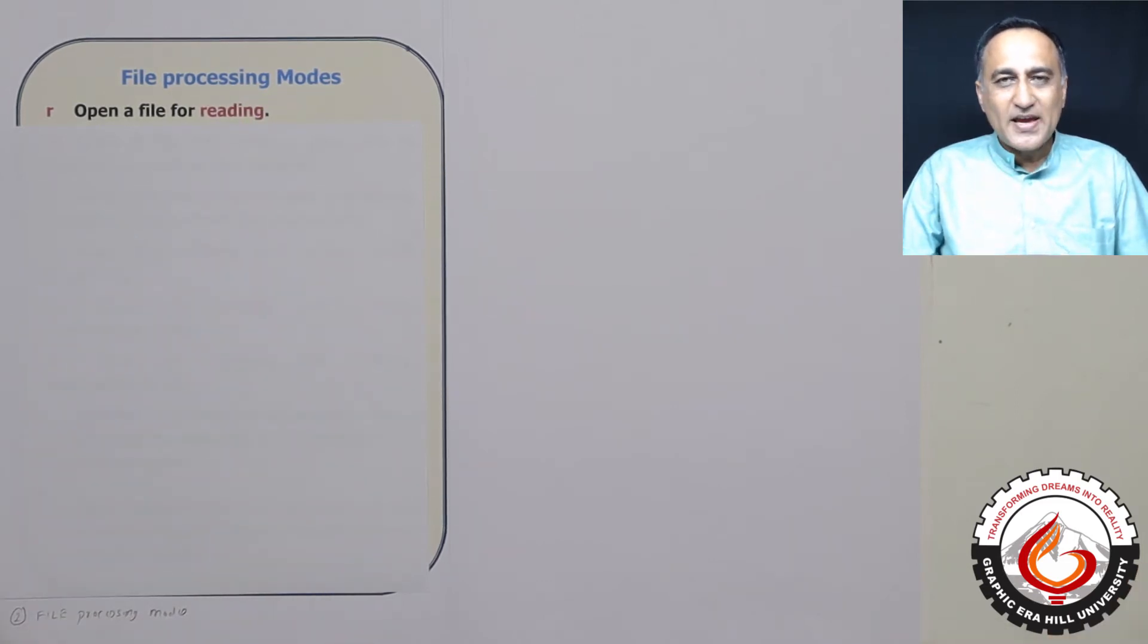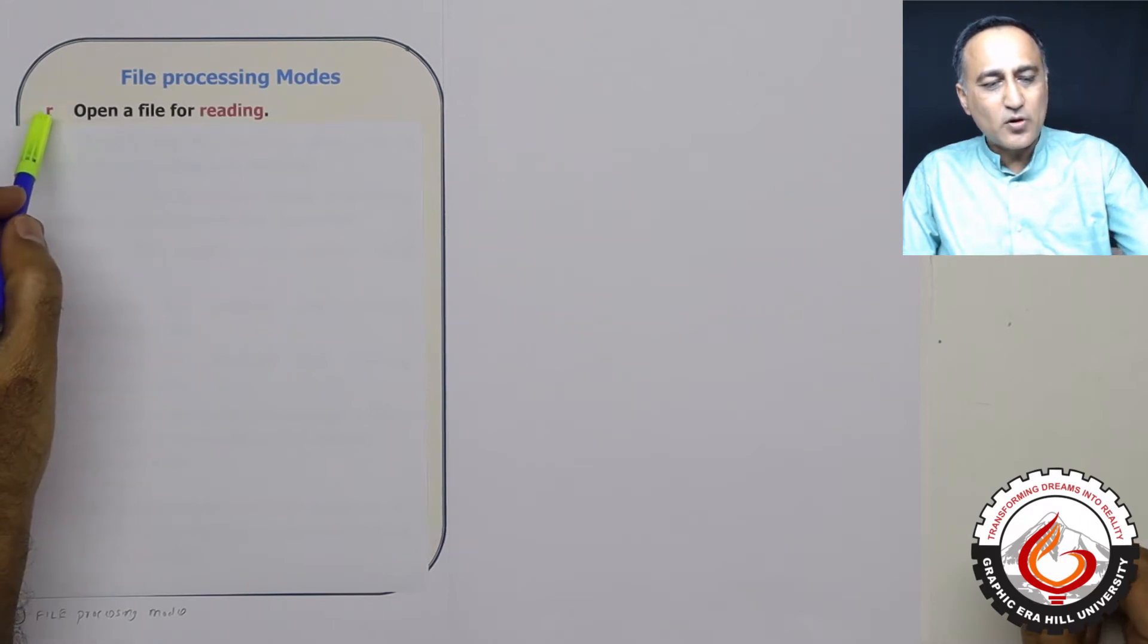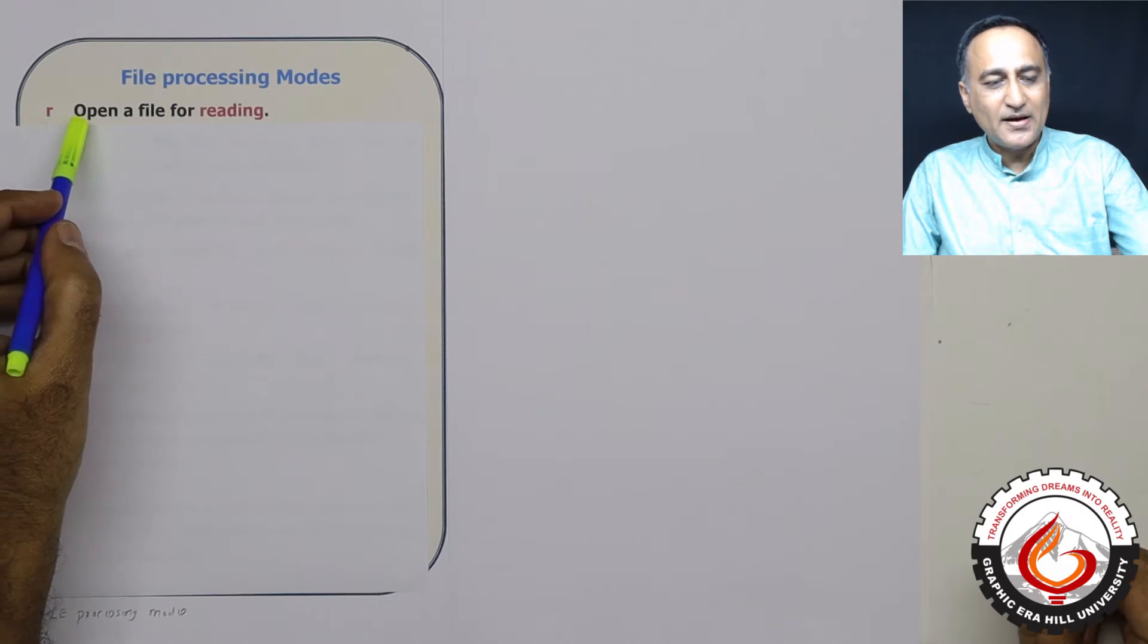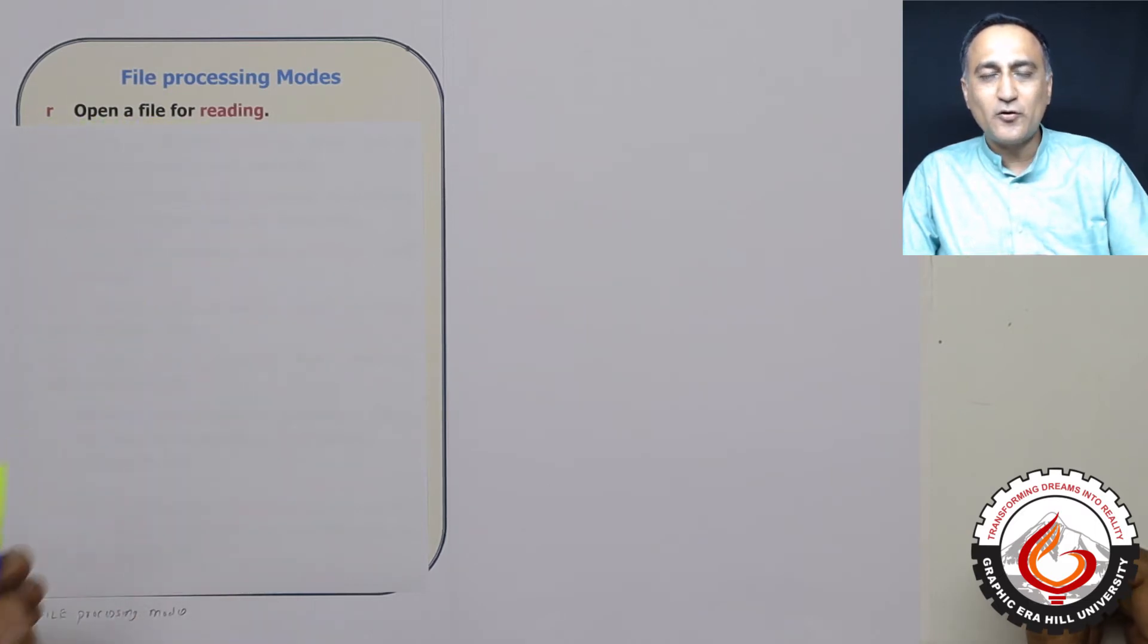Let's say I already have a file which has been created before. I just want to open it for reading. Then the R mode, what it means is if I use R when I'm opening a file, that means I can open a file for reading only. I can only read from that file.